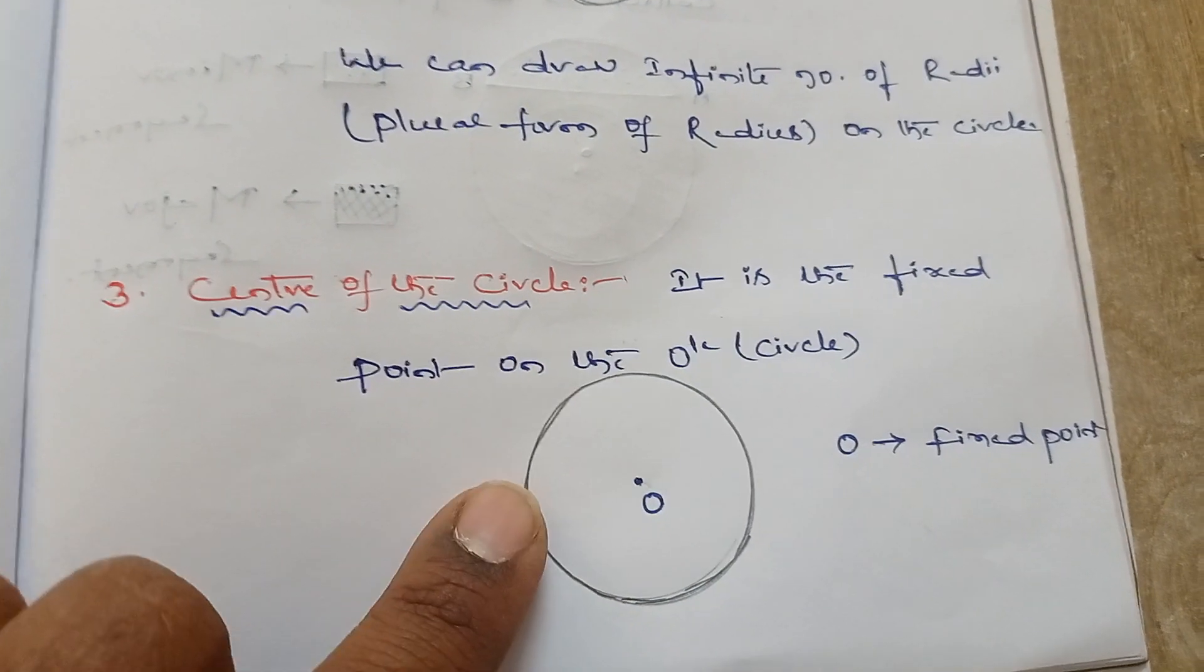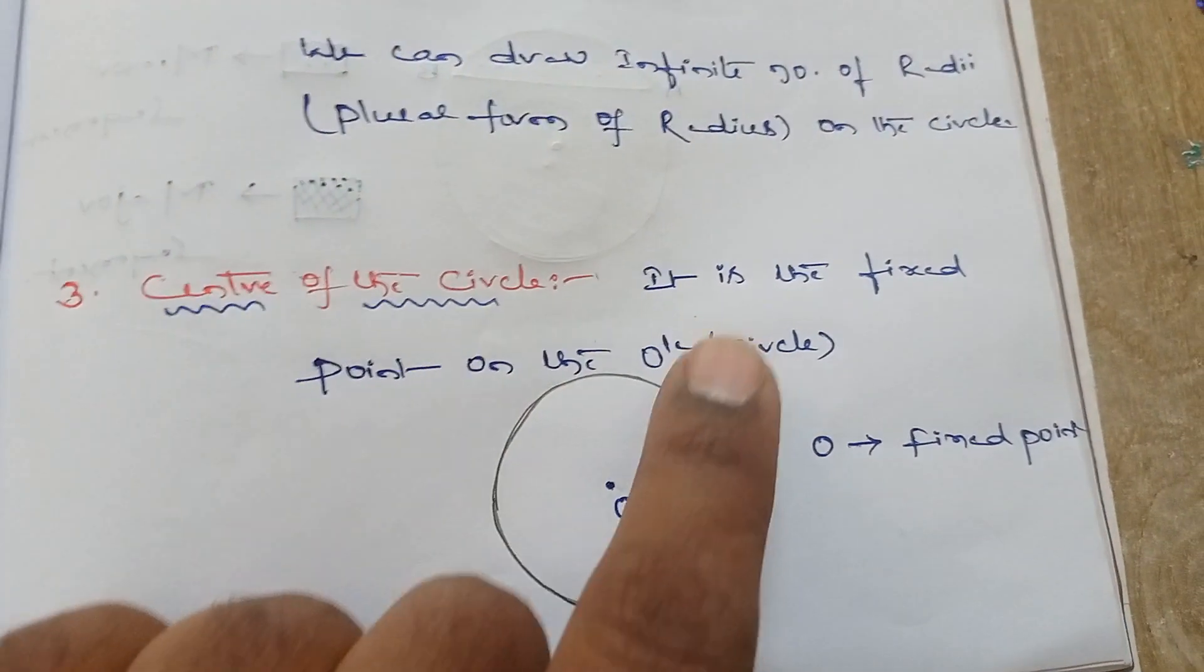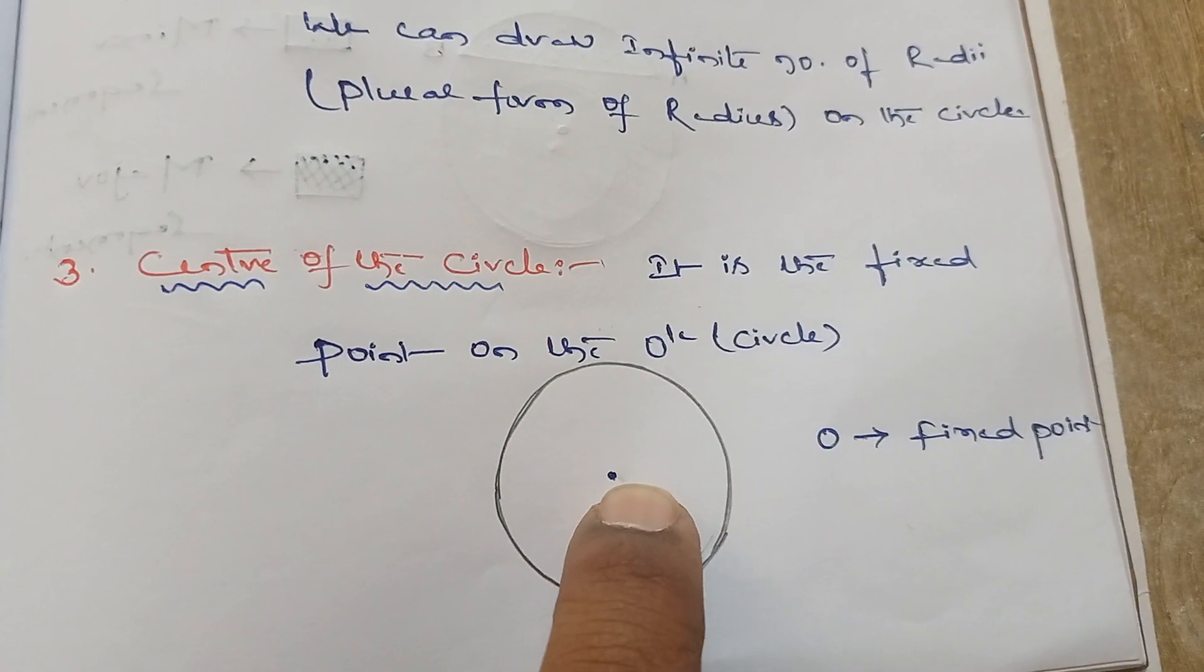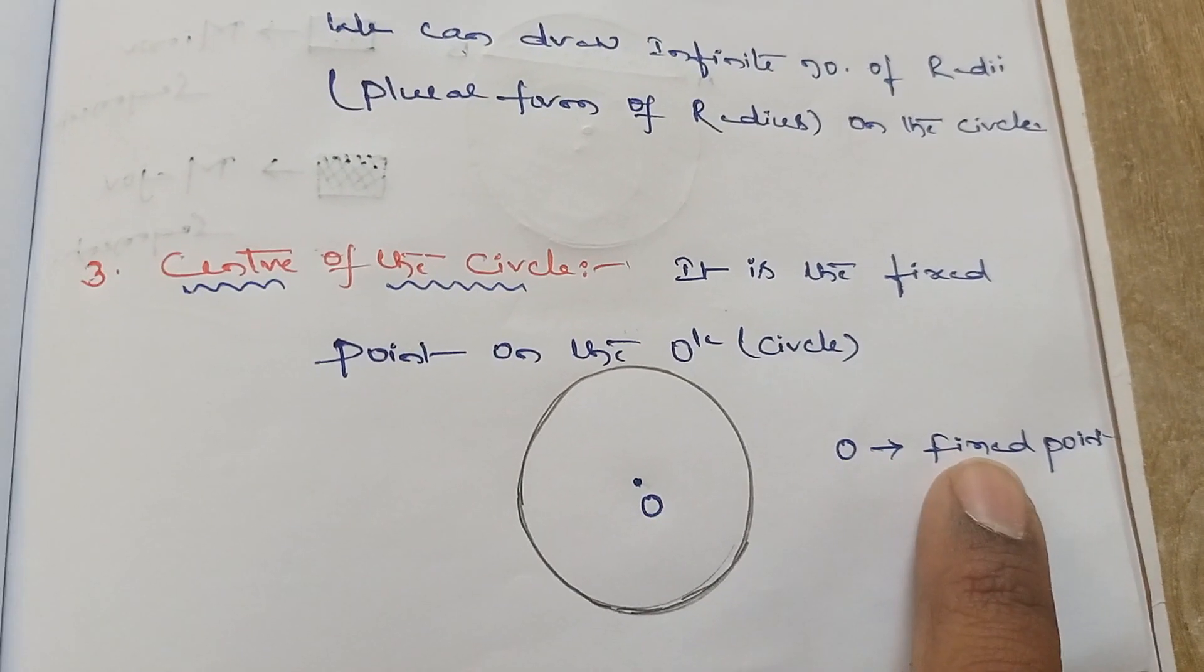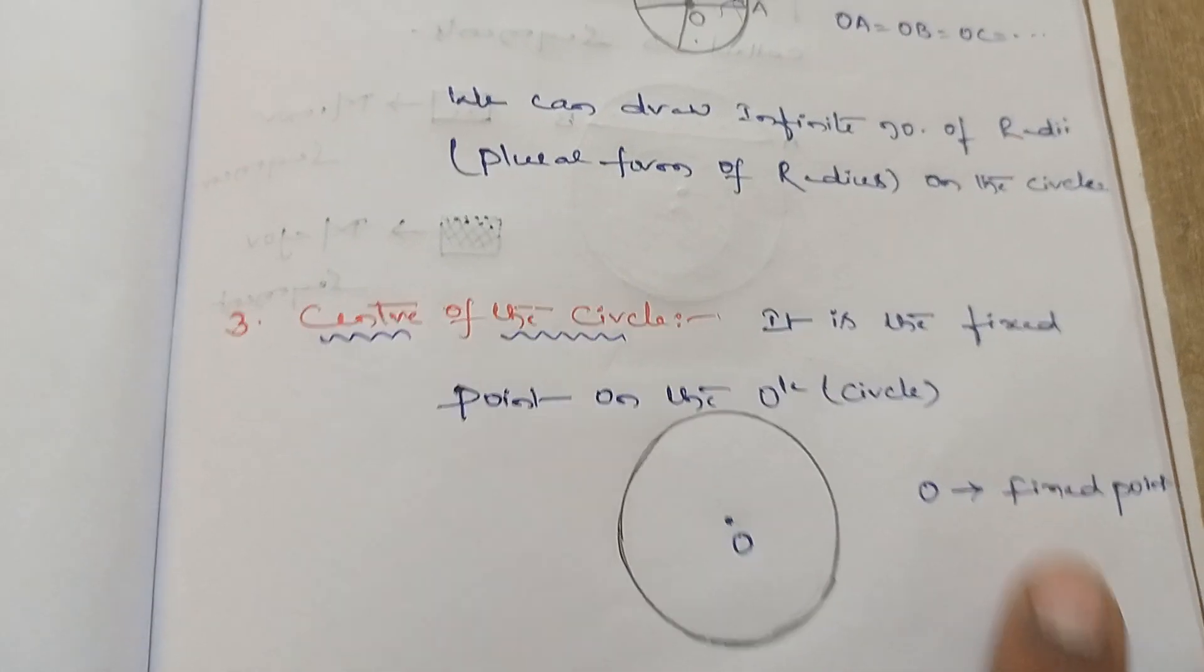It is a fixed point on the circle. It is denoted by O or C. O is called the fixed point here. I hope you understand these terminologies.